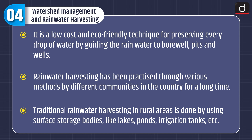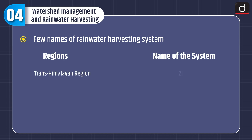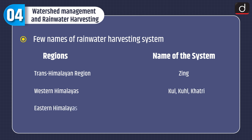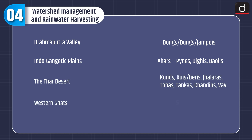Traditional rainwater harvesting in rural areas is done by using surface storage bodies like lakes, ponds, irrigation tanks, etc. The names of rainwater harvesting systems vary across regions: in the Trans-Himalayan region it is called the Zinc system; Western Himalayas, Kul or Khatri system; Eastern Himalayas, Apatani system; Northeastern Hill Ranges, Zabo system; and Brahmaputra Valley, Dongs or Jampoise system.